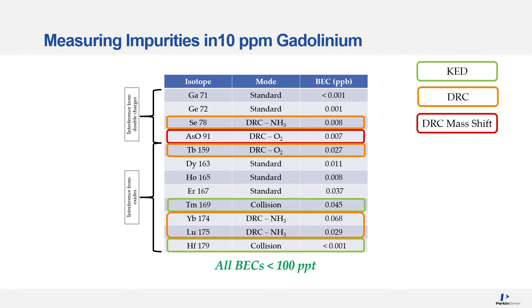Looking at measuring impurities in 10 ppm gadolinium, the interferences from double charges are similar to the last example — gallium and germanium can be measured in standard mode, selenium in DRC ammonia mode, and arsenic in DRC oxygen mass shift mode. Looking at interferences from the oxides, we're starting to have to use some DRC reaction modes as well as collision modes and standard modes to get the best BECs for those elements.